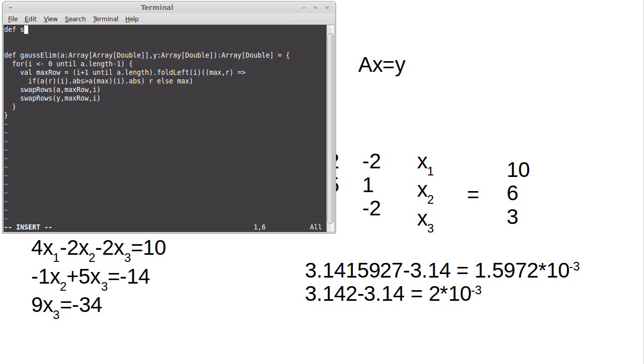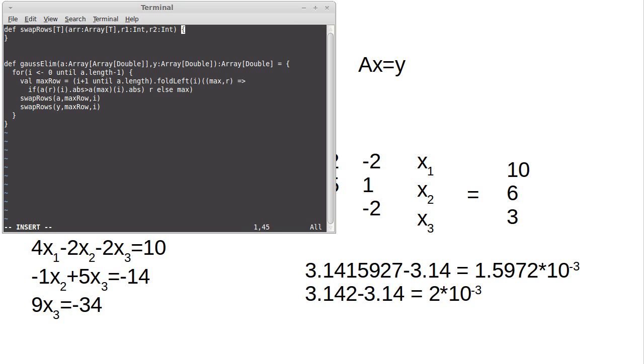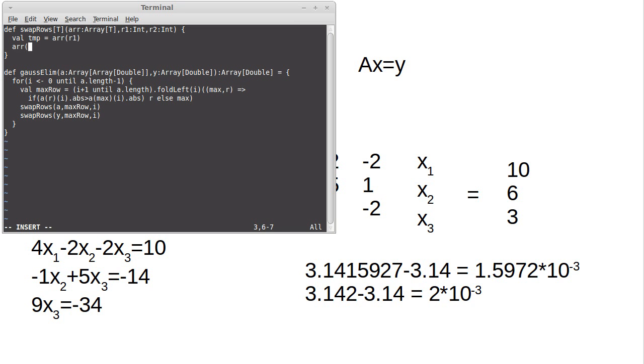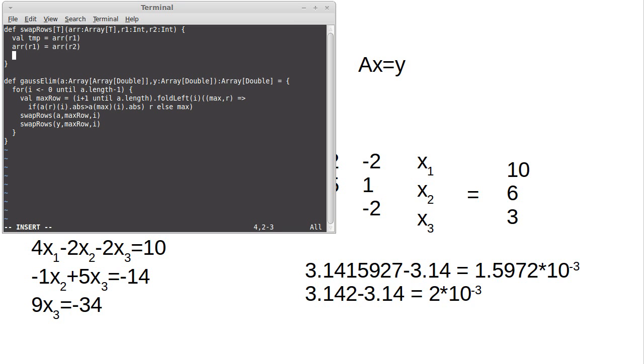So, how do we write this swap rows function? Def, swap rows. Well, it needs to take the array. But, what is it an array of? It turns out that A and Y have different types. One is an array of array of doubles, and the other one is just an array of doubles. So, I need to pass in a type parameter here. And so, this will be an array of T, and we don't really care what T is, because we're not doing anything with that. We're just swapping whole rows. I have row 1, is an int, and row 2, is an int. And inside of here, we have just a normal swap function. Val temp equals ARR sub R1, ARR sub R1 equals ARR sub R2, ARR sub R2 equals temp.